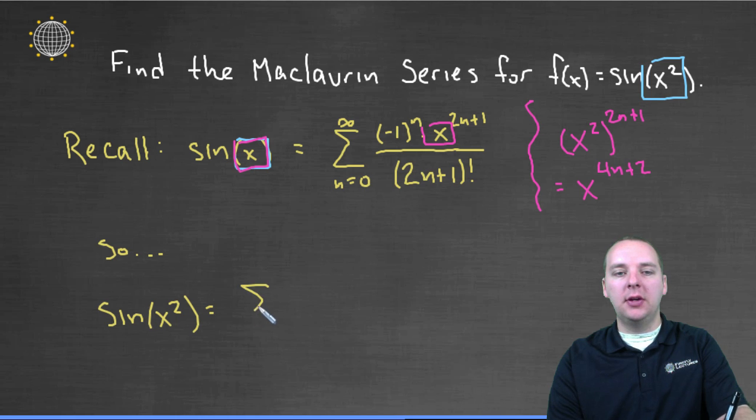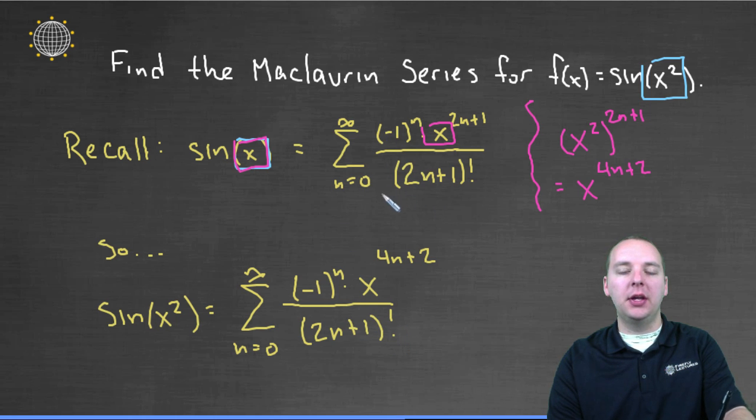would be equal to the sum from n equals zero to infinity of (-1)^n times x^(4n+2), all divided by (2n+1) factorial. These guys don't change right here.